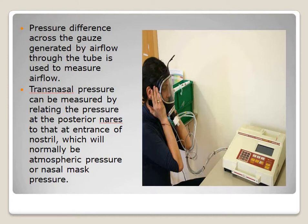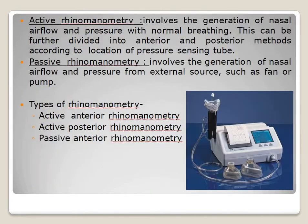Transnasal pressure is measured by relating the pressure at the posterior nares to the entrance of the nostrils, which is normally atmospheric pressure, or the nasal mask pressure. There is active and passive rhinomanometry: in passive rhinomanometry, nasal airflow and pressure are generated from an external source such as a fan or pump, whereas in active rhinomanometry the patient generates the flow by normal breathing. This is further divided into anterior and posterior methods according to the location of the pressure sensing tube.